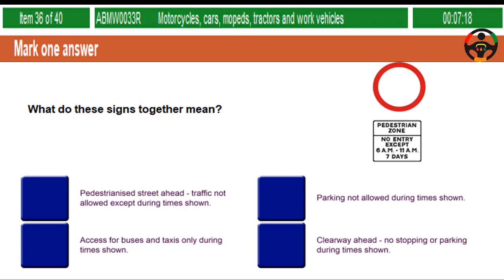What do these signs together mean? Pedestrianised street ahead. Traffic not allowed except during times shown. Parking not allowed during times shown. Access for buses and taxis only during times shown. Clearway ahead — no stopping or parking during times shown.